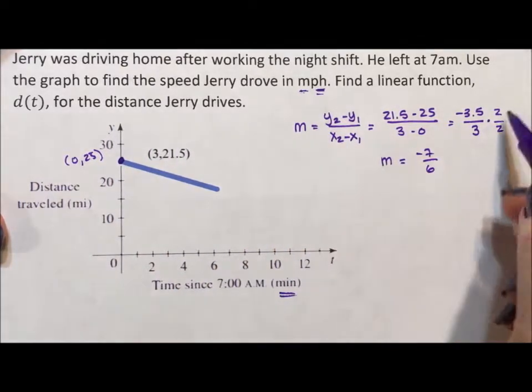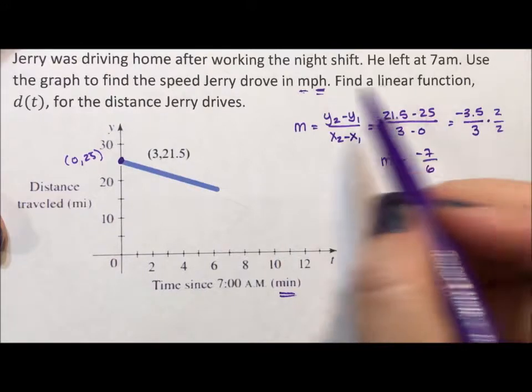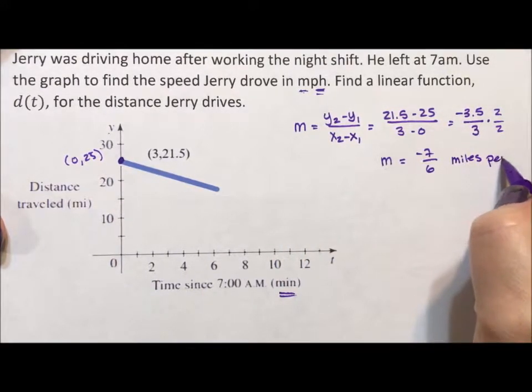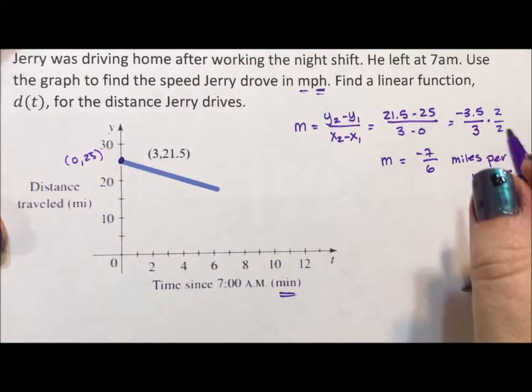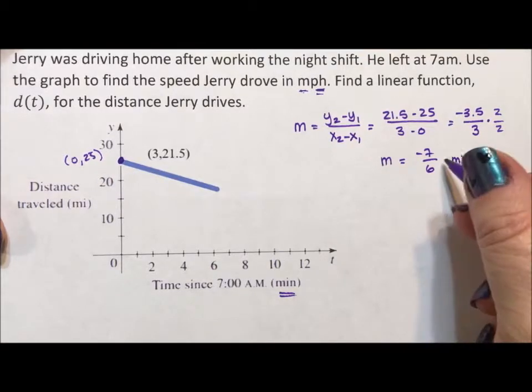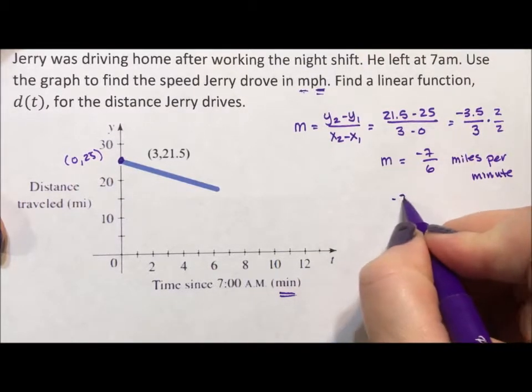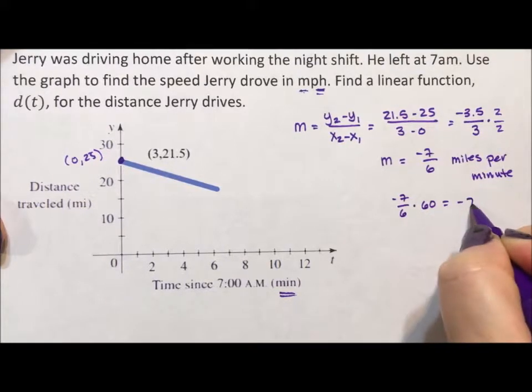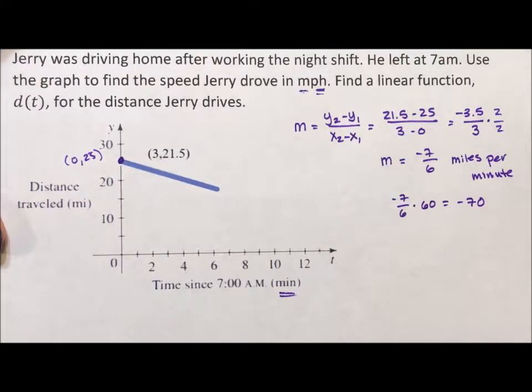We want everything in miles per hour. So this is miles per minute. I don't want miles per minute. Nobody talks about that. So there are 60 minutes in an hour. So if every minute that's how far he goes, after 60 minutes, he's going to go 70 miles towards home.